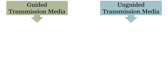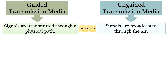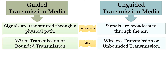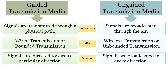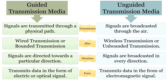Now let us discuss the differences between guided and unguided transmission media. The guided transmission media uses a physical path or conductor to transmit signals, whereas the unguided media broadcasts signals through the air. The guided transmission media is referred to as wired or bounded transmission, whereas the unguided transmission media is referred to as wireless or unbounded transmission. The guided media provides direction to the signal, whereas the unguided media does not. In guided media, data is transmitted in the form of electric or optical signals, whereas in unguided media, data is transmitted in the form of electromagnetic waves.